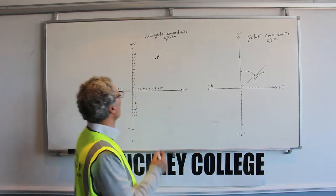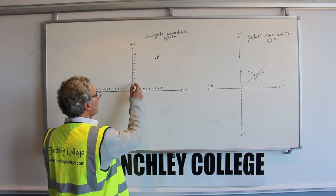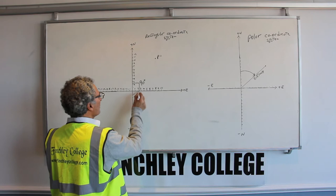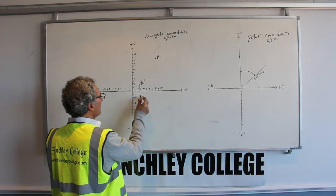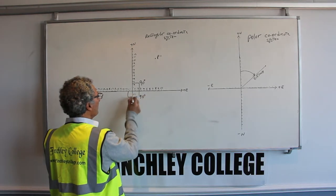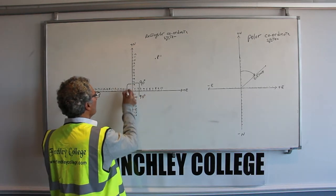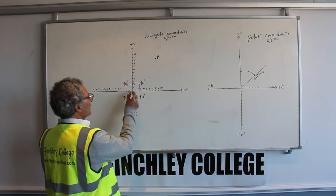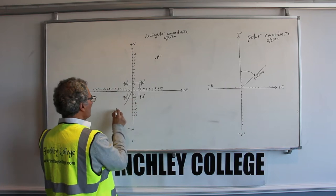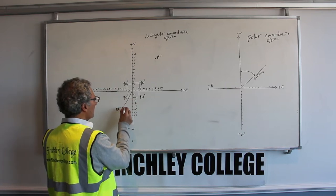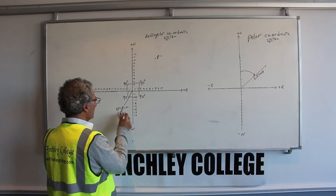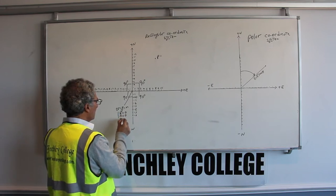The rectangular system is a very nice and simple one. You have two lines at 90 degrees to each other, so all of these angles are 90 degrees. The intersection is called the origin, and the origin has a coordinate of easting zero, northing zero, height zero.